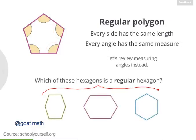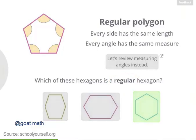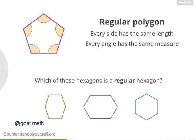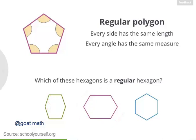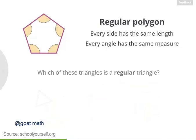Next, take a look at these three hexagons — which of them is a regular hexagon? If we look closely, we can see that for this hexagon, all the sides have the same length, but not all the angles are the same. And for this one, the angles are all the same, but not the sides. This is the regular hexagon over here, with equal sides as well as equal angles.